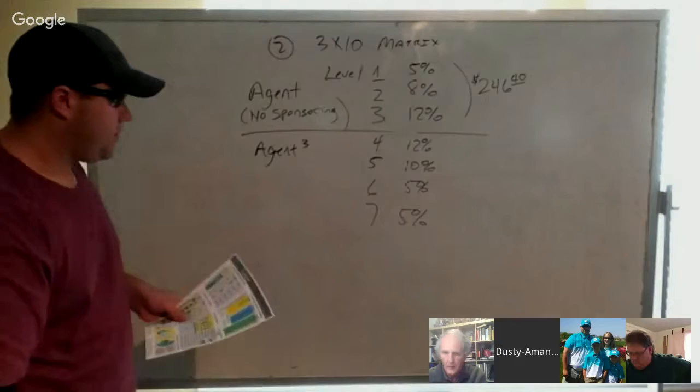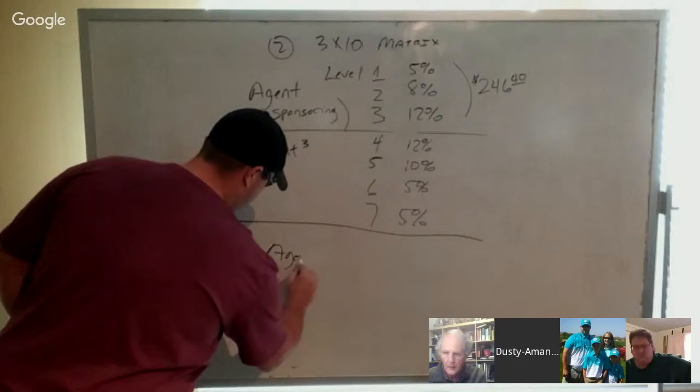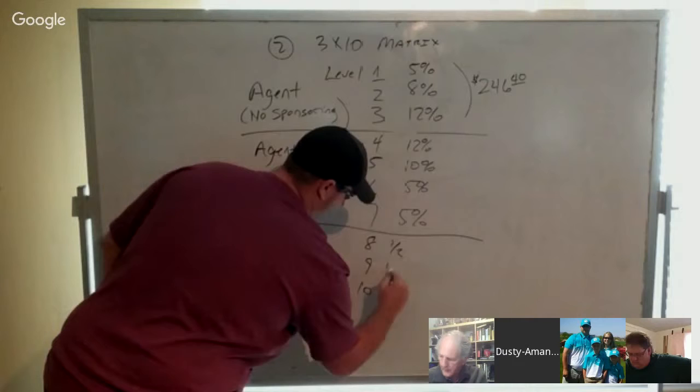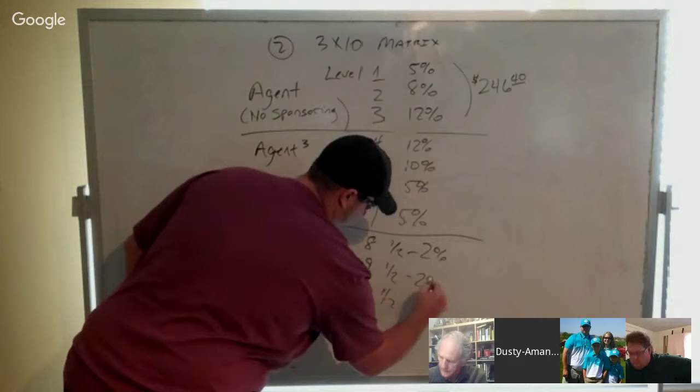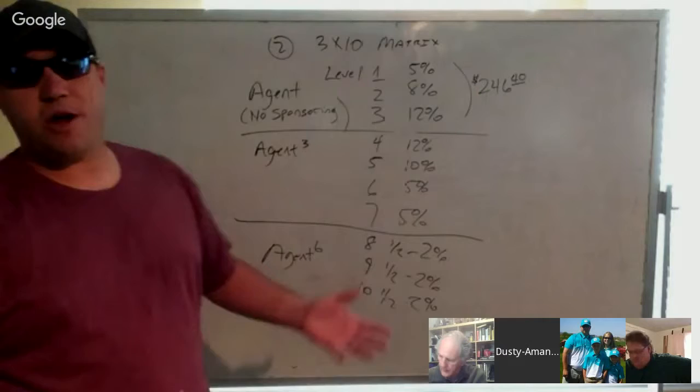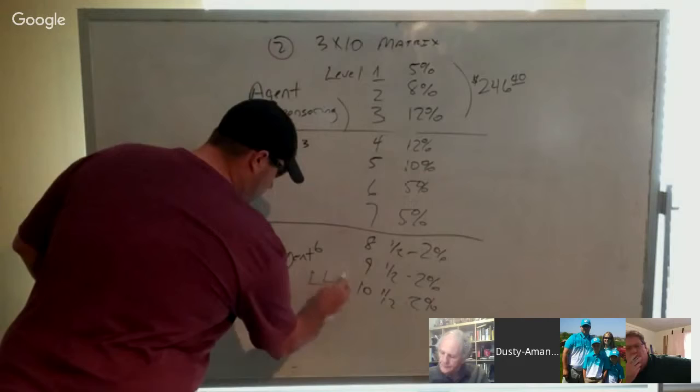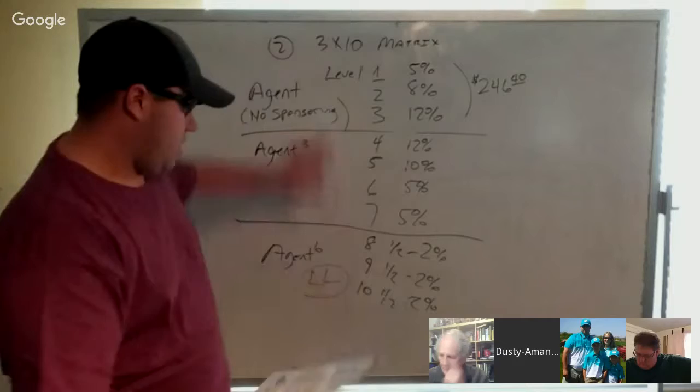As an agent six, we have levels eight, nine, and ten. Those pay anywhere from half percent to 2%. What's the difference, you might ask? It's where you're ranked in the company. We'll talk about rank advancements in a minute. These are called leadership levels. So it's based on your leadership position in the company of how much percentage you have opened up.